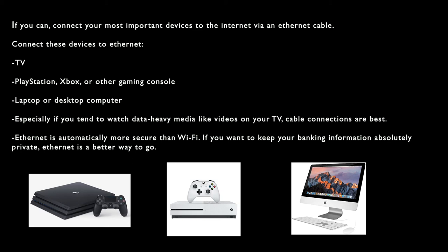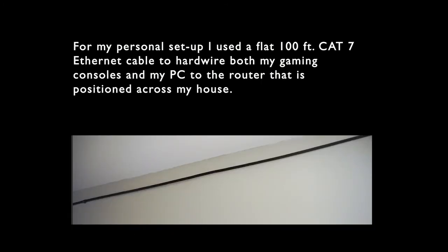Cable connections are best. Ethernet is automatically more secure than Wi-Fi. If you want to keep your banking information absolutely private, Ethernet is a better way to go. For my personal setup, I use a flat, 100-foot Cat7 Ethernet cable to hardwire both my gaming consoles and my PC to the router that's in position across my house.